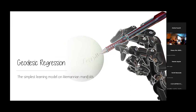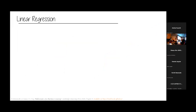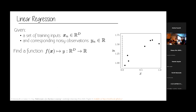To explain what geodesic regression is about, it makes sense to start from linear regression. I know probably all of you know this already, but it's important to introduce it because it will help us make some parallels. We're going to assume a set of training inputs that live in Euclidean space, where the output is just a scalar function. What we want to do is find a function that models these observations through a linear model.